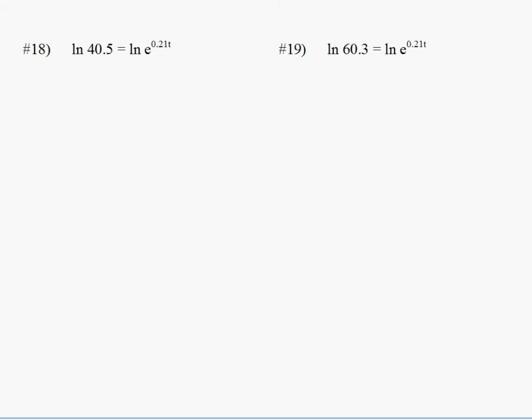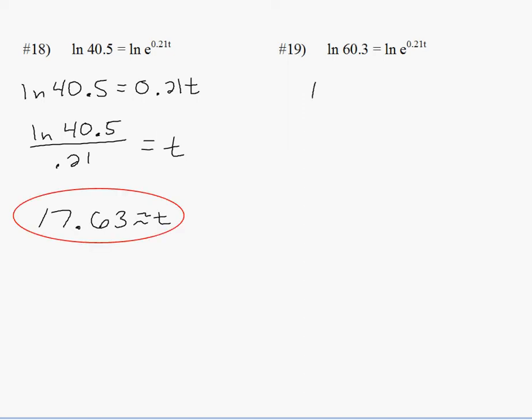Number 18, the natural log on the right and the argument of e is going to cancel out and just give you the exponent. If you divide both sides by 0.21, you get t by itself. Put it in your calculator. You get 17.63.